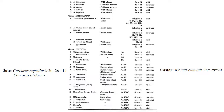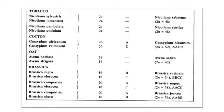Jute is Corchorus capsularis and Corchorus olitorius — these are commercial crops. Jute has 14 chromosome numbers. Castor (Ricinus communis) has 20 chromosome numbers and is diploid. Cotton — Gossypium hirsutum — is the major cultivated species, AADD, tetraploid with 52 chromosome numbers. Oats is Avena sativa with 42 chromosome numbers.